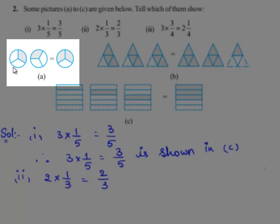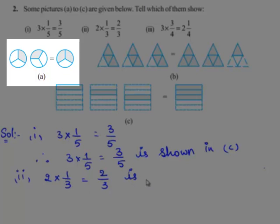Since 1 part out of 3 parts is shaded in each circle, each circle represents a fraction 1 by 3. Since there are 2 such circles, it represents 2 times 1 by 3, which is equal to 2 by 3. Therefore, this represents a circle having 3 parts out of which 2 parts are shaded. Therefore, 2 times of 1 by 3, which is equal to 2 by 3, is shown in drawing A.